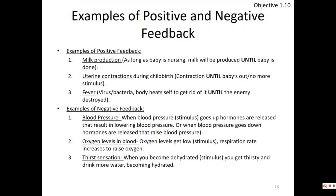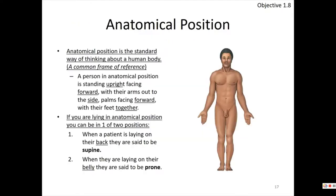Examples of positive feedback: milk production continues until the baby is done feeding; childbirth contractions get worse until the baby is delivered; fever — the body raises temperature until the pathogen is destroyed, getting worse before it gets better. Examples of negative feedback: if blood pressure goes up, the body releases hormones to lower it; if it goes down, hormones raise it. Low oxygen causes deeper and faster breathing. Dehydration triggers thirst, prompting hydration — which then undoes the stimulus.